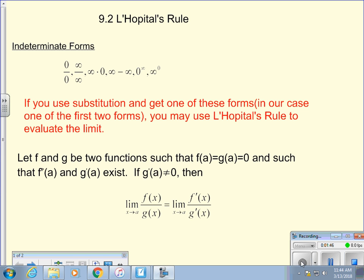Which says, let f and g be two functions, such that f(a) and g(a) are equal to 0, and such that f'(a) and g'(a) exist. In other words, when you plug in, when you substitute a into f and into g, you get 0. But the derivatives of f at that point and g at that point do exist. And if g'(a) is not equal to 0, then the limit as x approaches a of f(x) over g(x) is equal to the limit as x approaches a of f'(x) over g'(x).